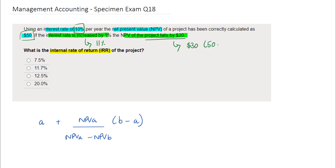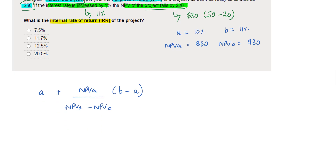It shouldn't really matter which rate you take as A or B, as long as the associated NPVs match those rates correctly. For the purpose of my workings, I'm going to assume that rate A is 10% and the respective NPV using rate A is $50, rate B is 11% and the respective NPV using rate B is $30.